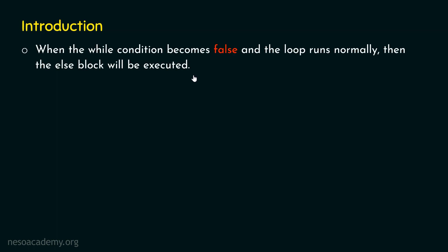We also understood in our previous presentation what is the use of the break keyword. Break keyword allows us to terminate the loop, but this is called abnormal termination — it is not the termination that happens because of the while condition. If there is any statement outside the while loop, that will be executed after termination. So in both cases, the statement after the while loop will be executed. But let's say the requirement is to execute a set of statements only when the while condition becomes false and not when the break keyword is encountered — only when the loop terminates normally.